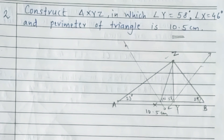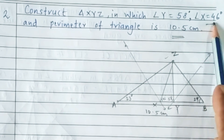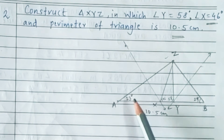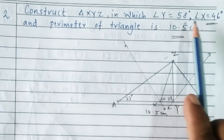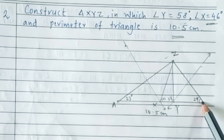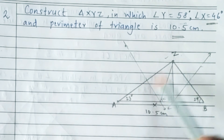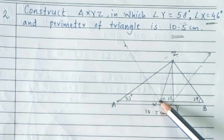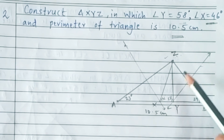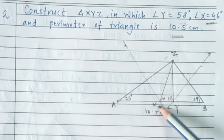First step: draw base segment AB of length 10.5 centimetres. Half of angle X (46°) is 23 degrees, so make an angle of 23 degrees at point A. Half of angle Y (58°) is 29 degrees, so make an angle of 29 degrees at point B. The point of intersection of both rays will be point Z. Now draw the perpendicular bisector of ZA and ZB. Wherever the perpendicular bisector of ZA intersects AB will be point X, and wherever the perpendicular bisector of ZB intersects AB will be point Y.